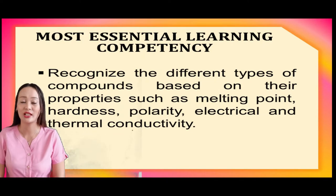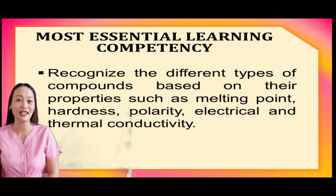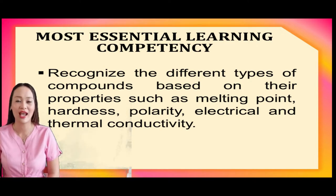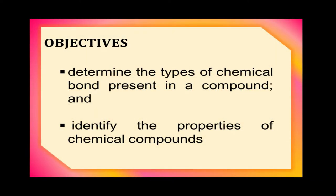I am here to help you learn more about the lesson. Our topic is taken from the most essential learning competency of the Department of Education: recognize the different types of compounds based on their properties such as melting point, polarity, hardness, electrical, and thermal conductivity. As learners, you are expected to determine the types of chemical bond present in a compound and identify the properties of chemical compounds.